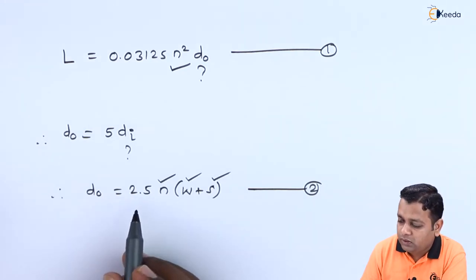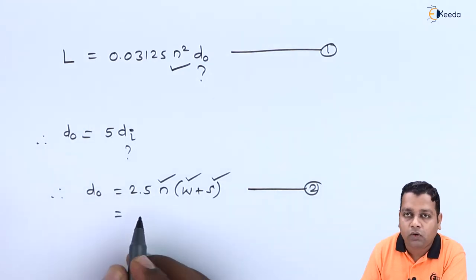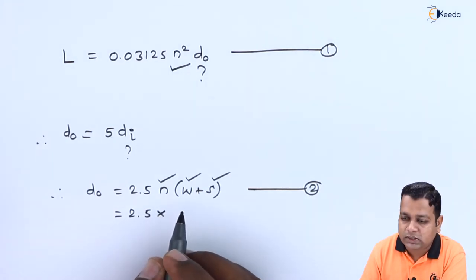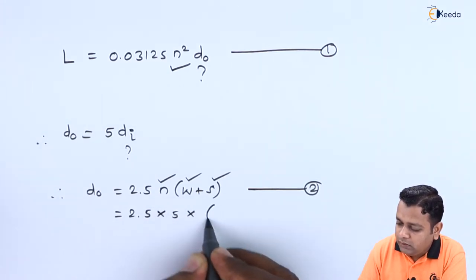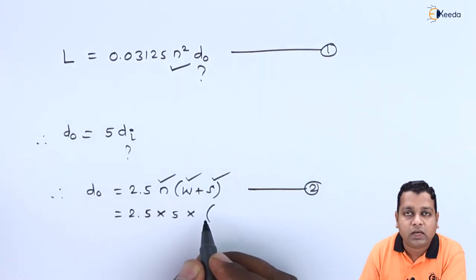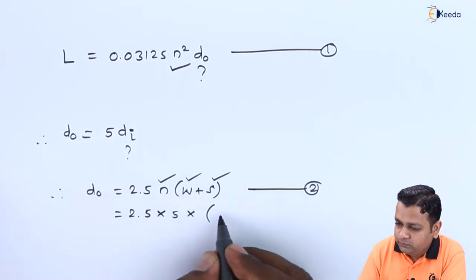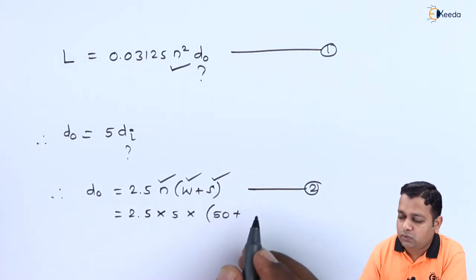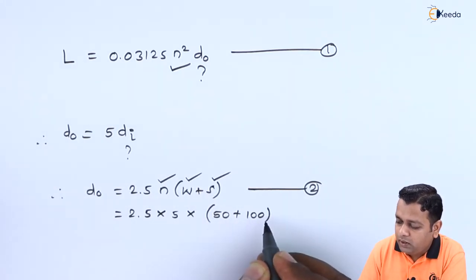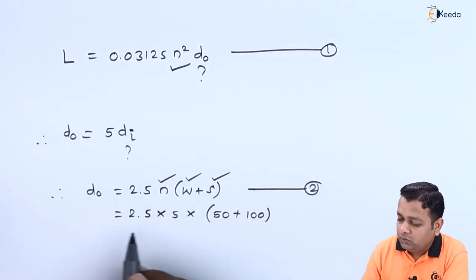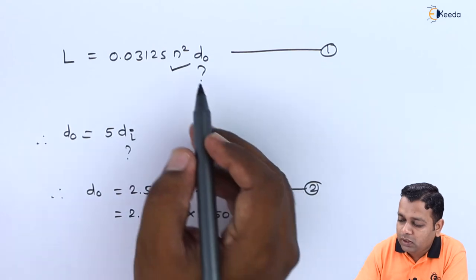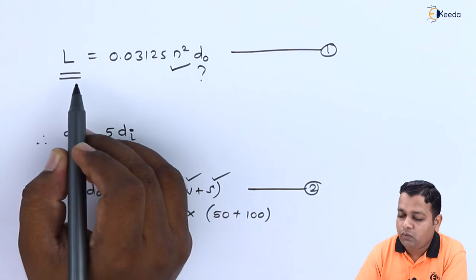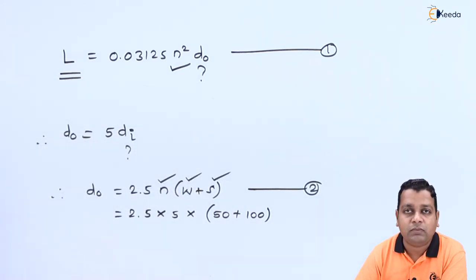If we substitute into this equation we get: d₀ = 2.5 × 5 × (50 + 100). So this d₀ value is to be substituted in equation number 1. Therefore, our intended required parameter inductance can be calculated.